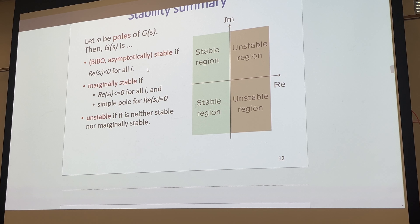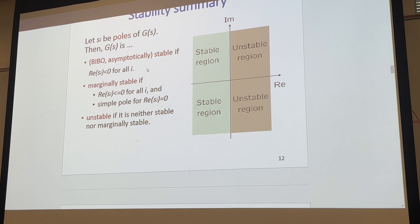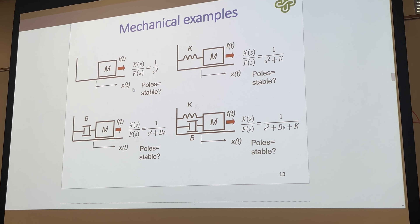For marginally stable, the real part has to be less than zero, but it can be zero if there's no imaginary part — so we can have it right at the origin. There can also be imaginary components, like a complex pair, also at the zero real part. But if there are repeats of those imaginary parts, or a repeat at the origin — like one over S squared — that would not be marginally stable. Something like one over S is a simple pole at zero, but if it's one over S squared plus some other terms, those multiple roots at the origin would not be marginally stable.